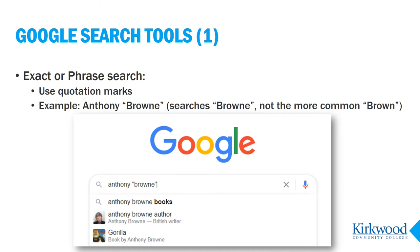The good news is that Google also provides tools that let you take control of these default search settings and be more specific about exactly what you're looking for. The first tool is the exact wording or phrase search, which is done with quotation marks. Quotation marks tell Google that you want to search only and exactly what is within the quotes.